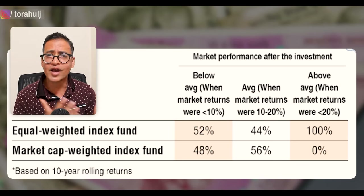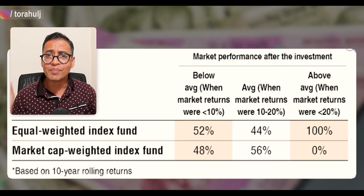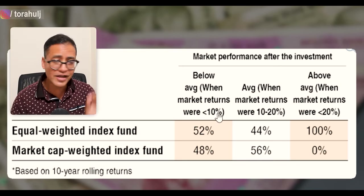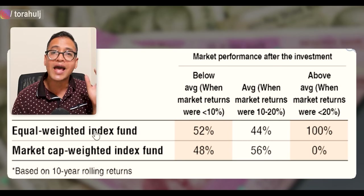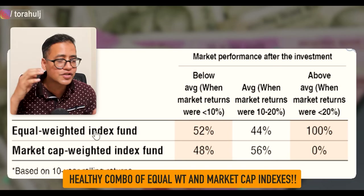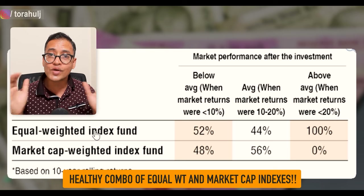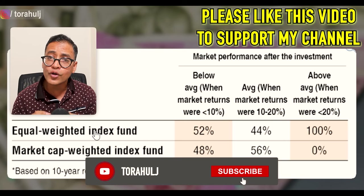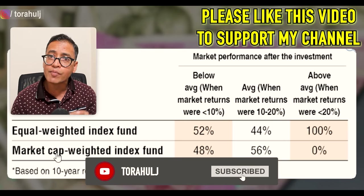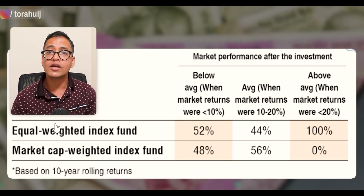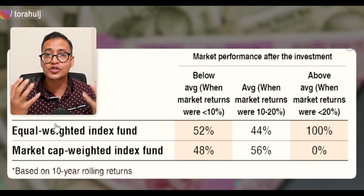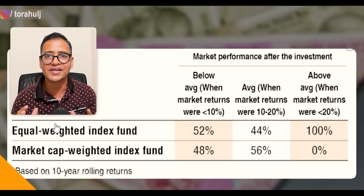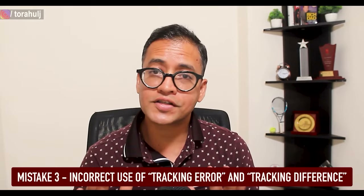As an index investor, you don't want to track all these statistics. Since you don't know which way the market will go, the best option is to have a healthy combination of equal weight and market cap weighted funds to minimize risk and maximize returns. Please avoid putting all your money into either one — make sure you have both in your portfolio.